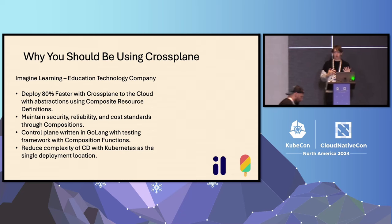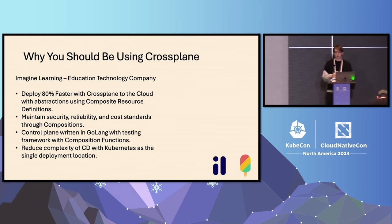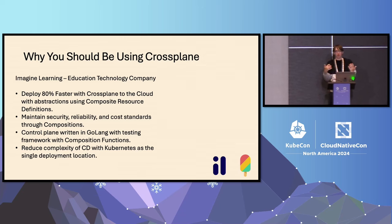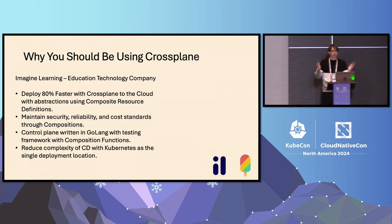This is due to the way we're able to abstract using Crossplane, using composite resource definitions, which is similar to CRDs. We're also able to maintain security, reliability, and cost standards by abstracting away all the complexities that, as an application developer, you may not need to worry about — like encryption. The platform can handle that, maintaining all those standards through compositions.